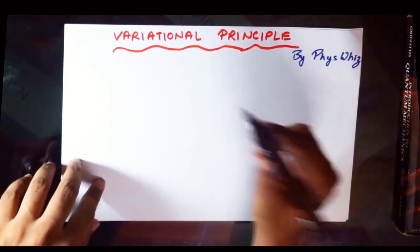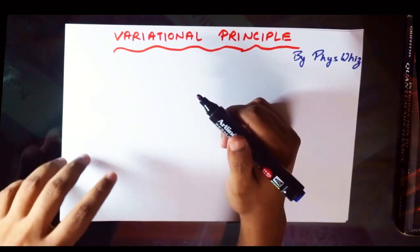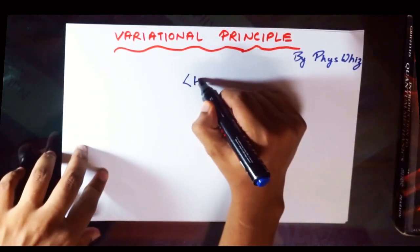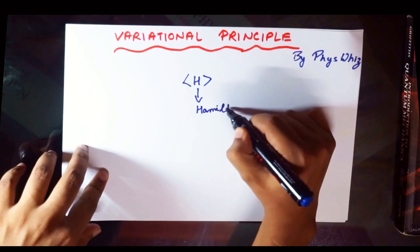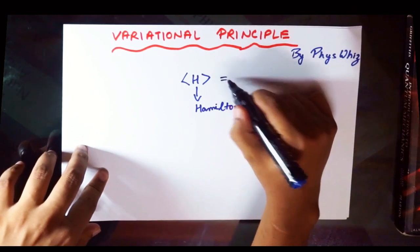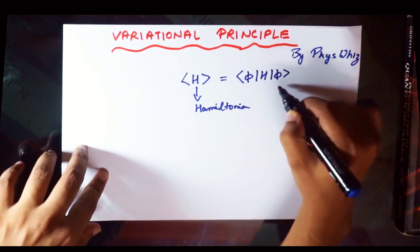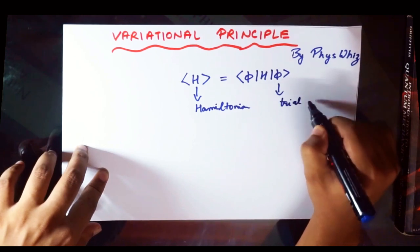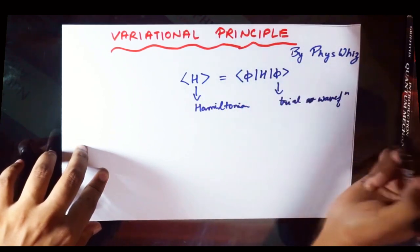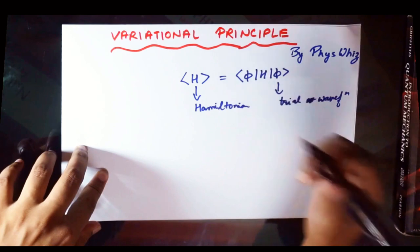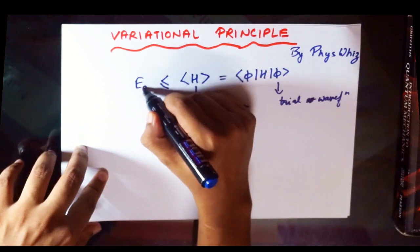Hey guys, welcome to a tutorial on the variational principle of quantum mechanics. The variational principle states that the expectation value of the Hamiltonian H of the system with respect to some trial wave function phi — where phi is the trial wave function that we are going to guess — is always greater than or equal to the ground state energy of the system.